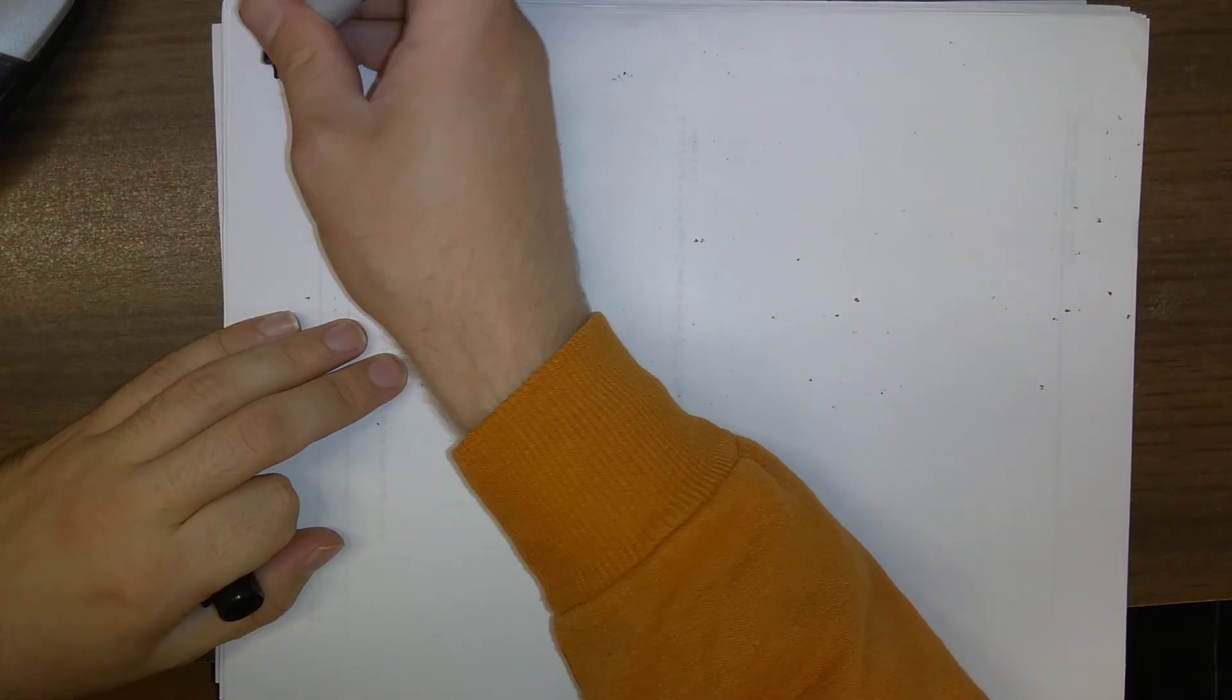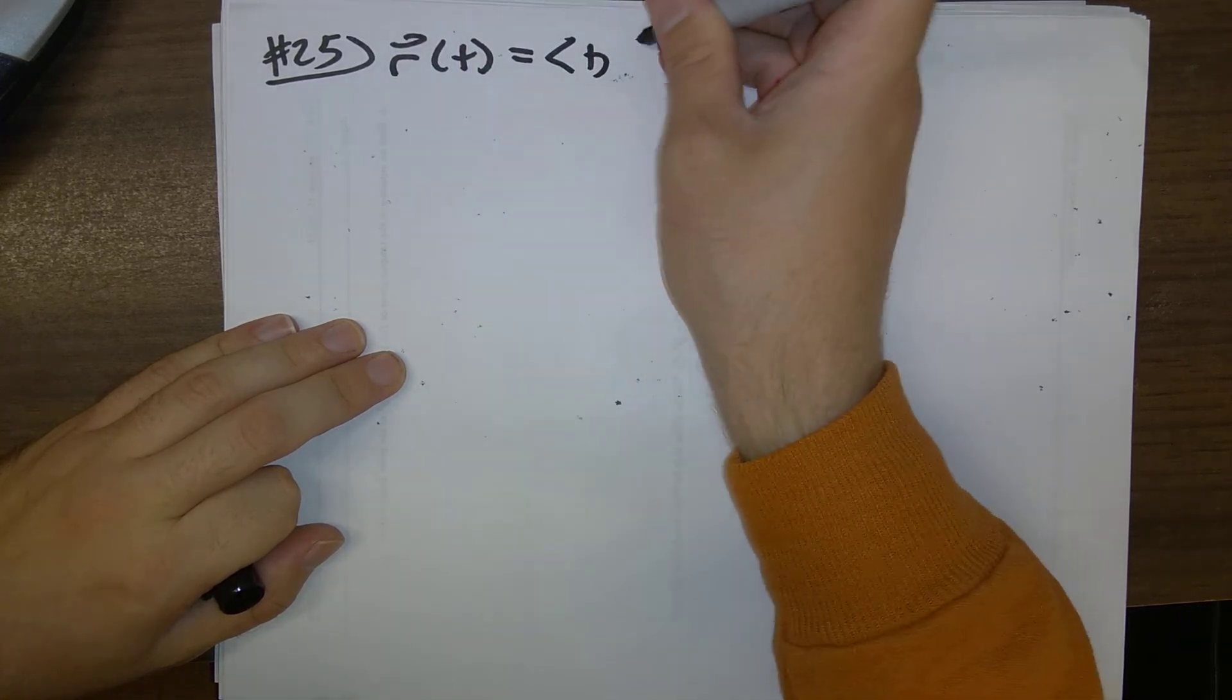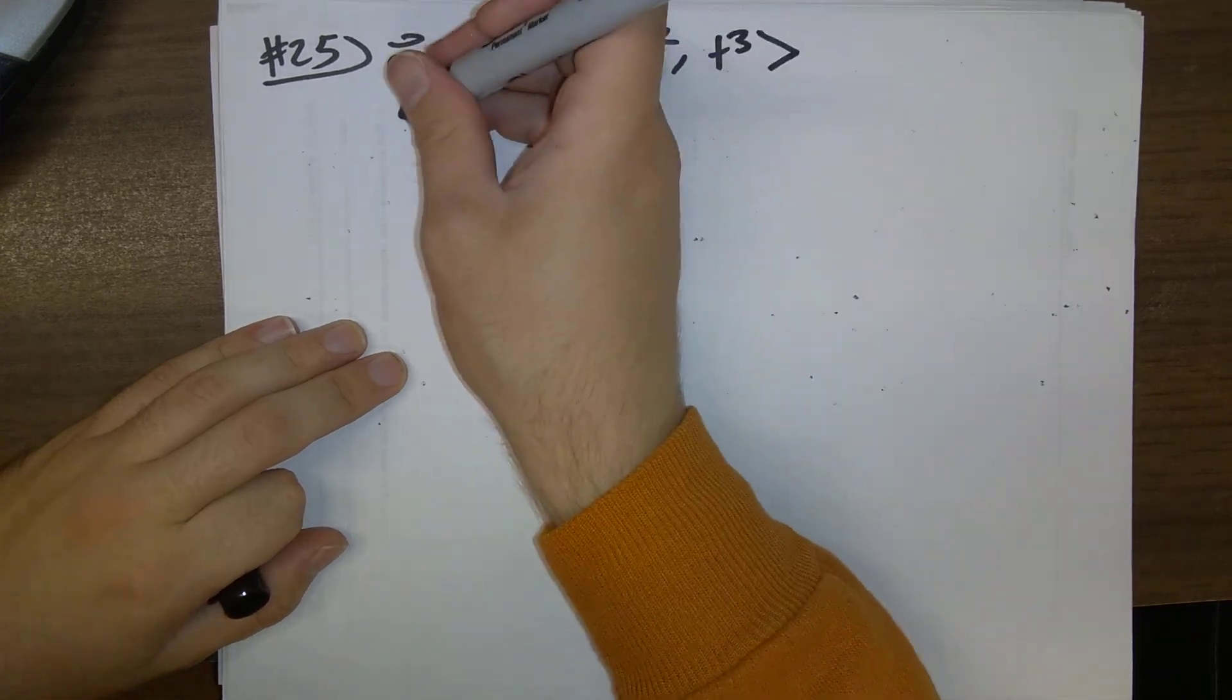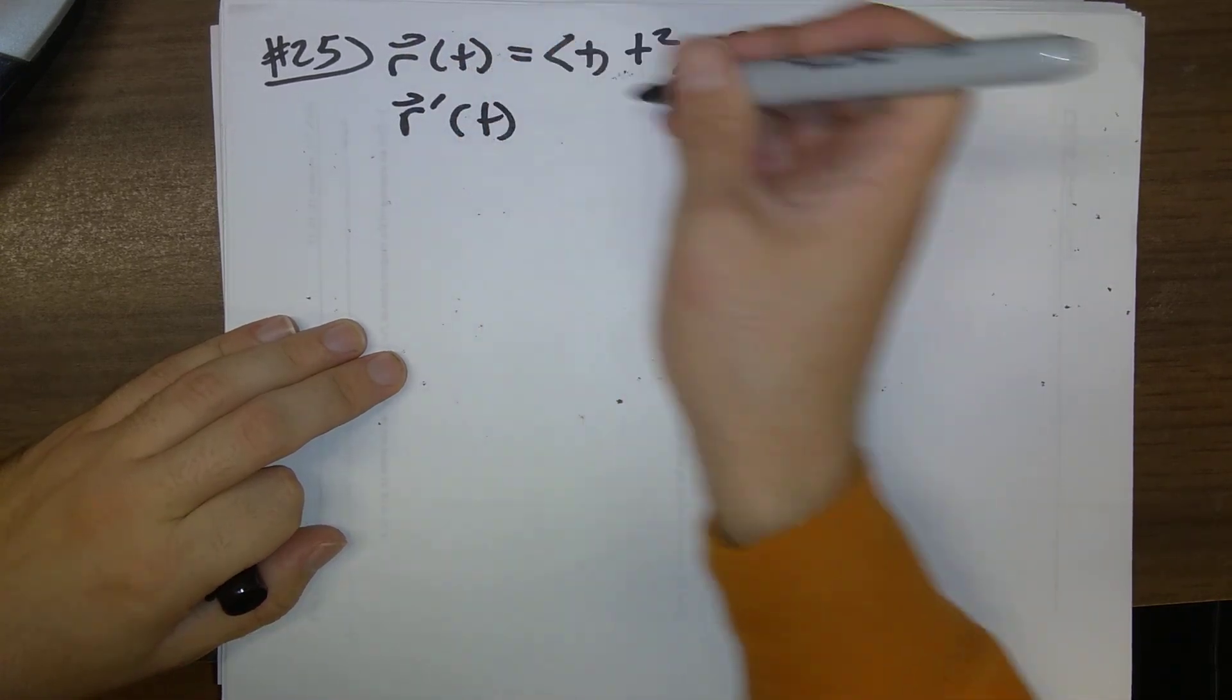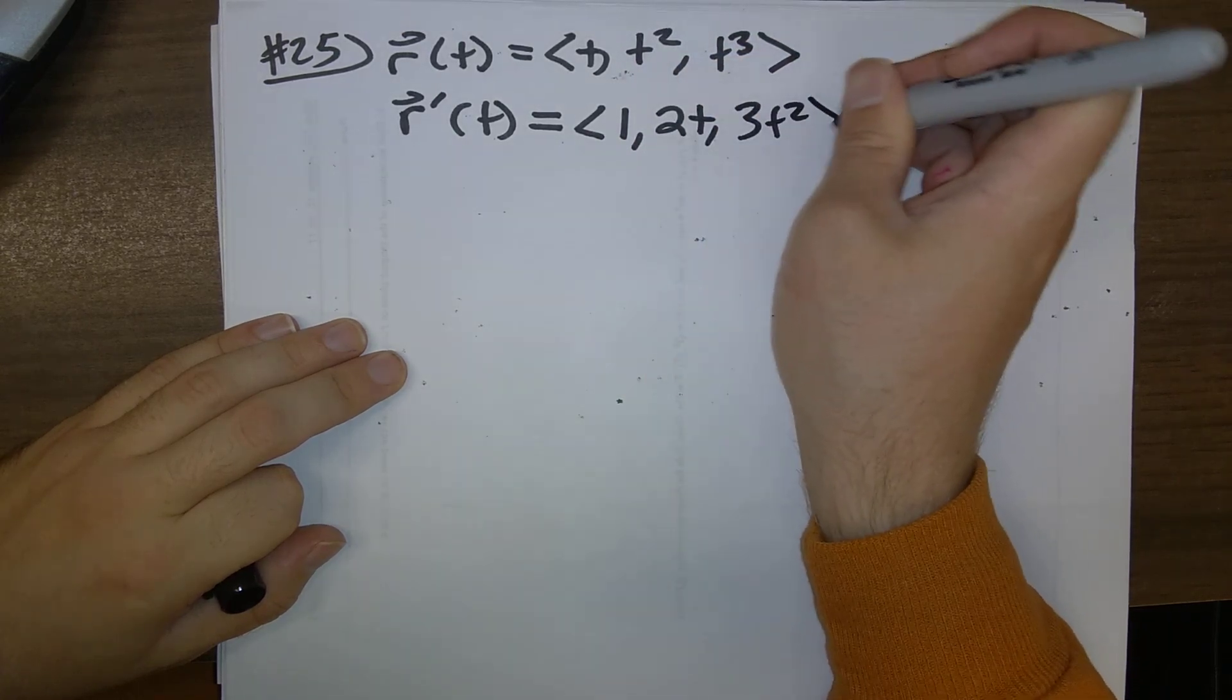Our function in number 25 is r of t is t, t squared, t cubed. So, we know we're going to need the derivative here, 1, 2t, 3t squared.